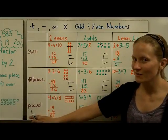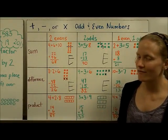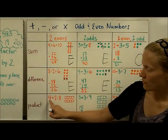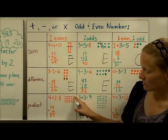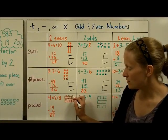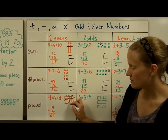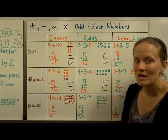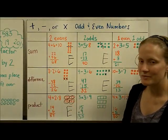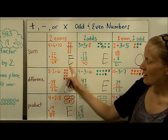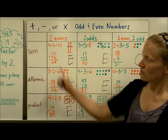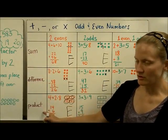Now let's look at products — multiplication. When we do 4 times 2, shown as four groups of two, we keep even pairs every time without change, making an even number. An even number times an even number always makes even. In fact, if you have two even numbers, you always get an even result whether you're adding, subtracting, or multiplying.